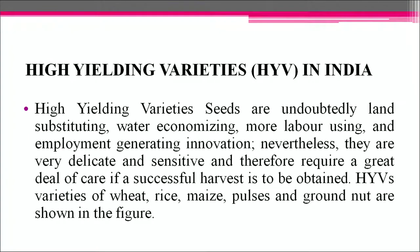High yielding variety seeds are undoubtedly land-substituting, water-economizing, more labor-using and employment-generating innovations. Nevertheless, they are very delicate and sensitive, therefore requiring a great deal of care for a successful harvest. Wheat varieties such as 260 HYVs with disease resistance, wheat UP310, high yielding durum wheat with high export value have been released. Several rice varieties include 600 HYV, Pro Agro 6201, Sehadri and fine-grained hybrid Pusa RD10.